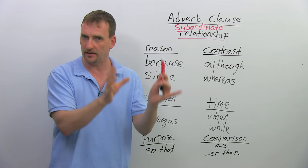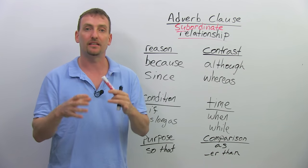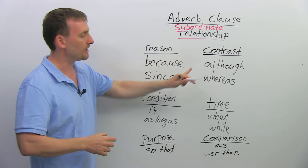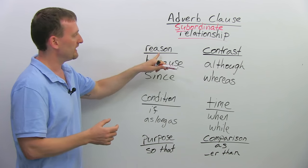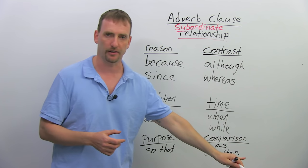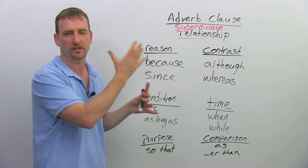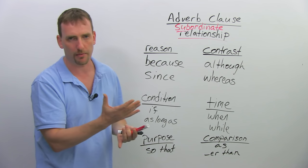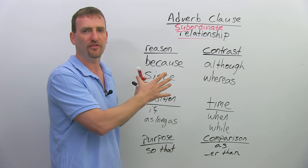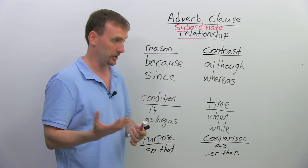The independent clause and the subordinate clause have a very distinct relationship. Here are some of those relationships: reason, contrast, condition, time, purpose, and comparison. There are others, but we're going to focus on these because they are the more common ones. And there are many conjunctions, but I'm only going to give you a few here just so you have an idea how the adverb clause works.